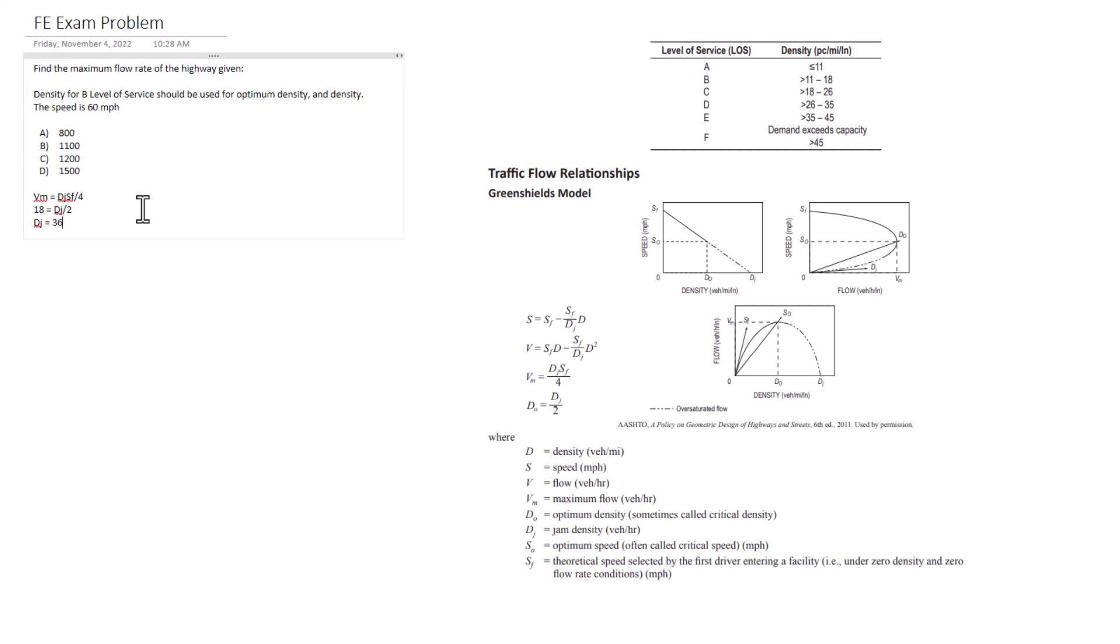Now we need to find the theoretical speed in order to find that max flow rate. And so the speed was 60 miles per hour is going to equal the theoretical speed minus the theoretical speed once again over the jam density, which was 36, is what we found before. And then we're going to go back here, multiplied by 18, which was what we determined to be the density for this specific roadway.